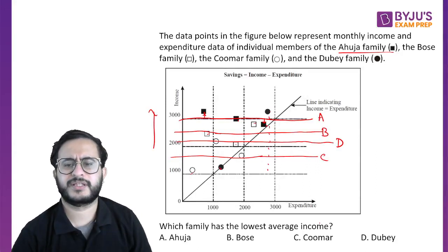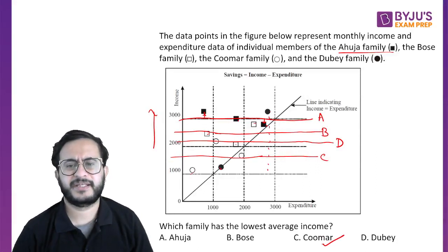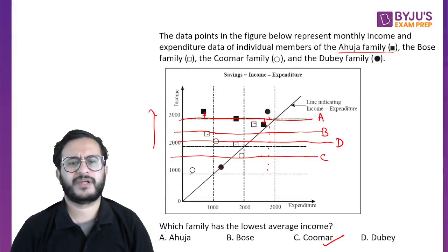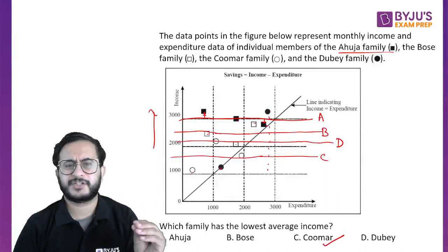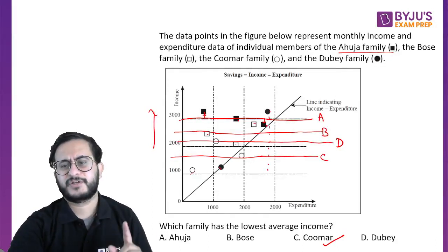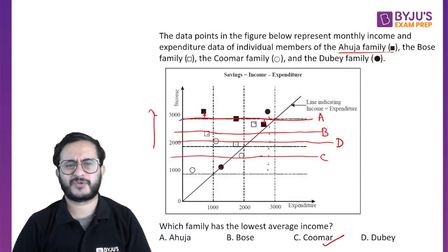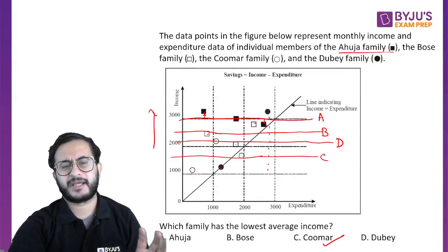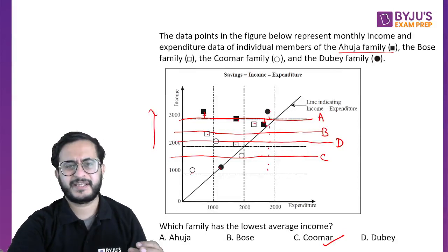Clearly, you can see that the Kumar family has the lowest income. Such questions could be answered just by observing the graph carefully — you do not need to read values from the graph. Make sure that if you get any such questions on graphs, try to observe the values and answer them rather than calculating the actual values. If necessary, then only go for the actual calculations.